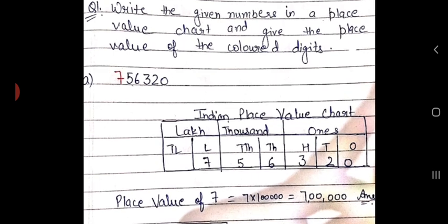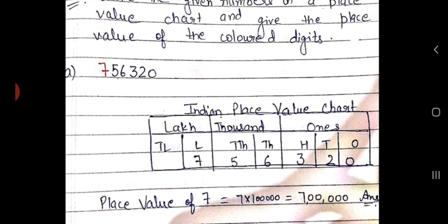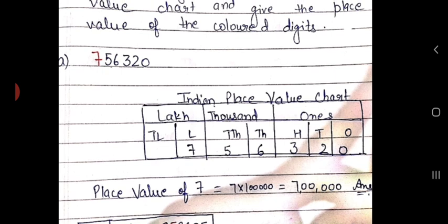We are dividing it into three parts, that is three periods: ones, thousands, and lakhs. Under ones we are having ones, tens, hundreds places. Under thousands we are having thousands and ten thousands places. Under lakhs we are having lakhs and ten lakhs places. I am going to fill in this chart from the right side — zero under the ones place, two under the tens place, and so on.